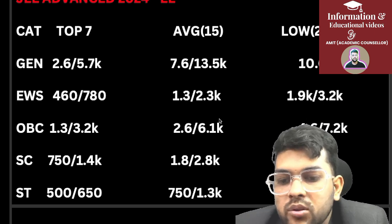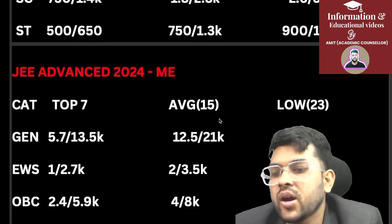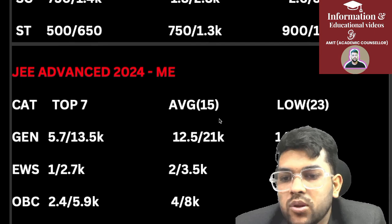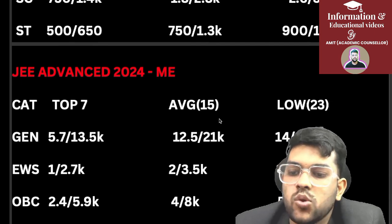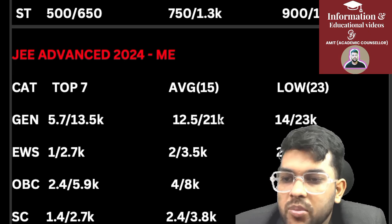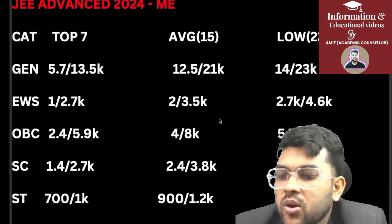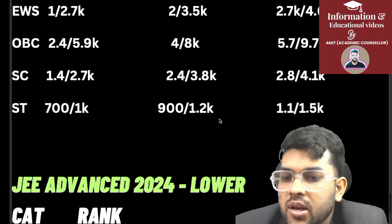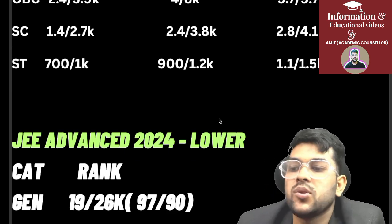For Mechanical Engineering: General — Top 7: 5,700 to 13,500; Top 15: 12,500 to 21,000; Lower 23: 14,000 to 23,000. EWS: Top 7 — 1,000 to 2,700; Top 15 — 2,000 to 3,500; Lower — 2,700 to 4,600. OBC: Top 7 — 2,400 to 5,900; Top 15 — 4,000 to 8,000; Lower — 5,700 to 9,700. SC: Top 7 — 1,400 to 2,700. ST: Top 7 — 700 to 1,000. Details for average and lower tiers are available on-screen.